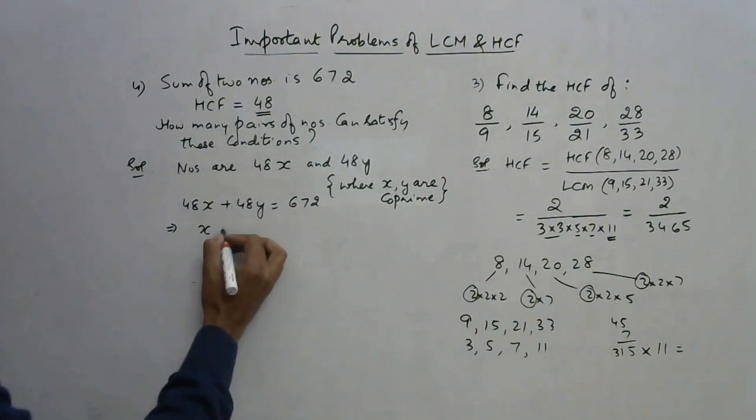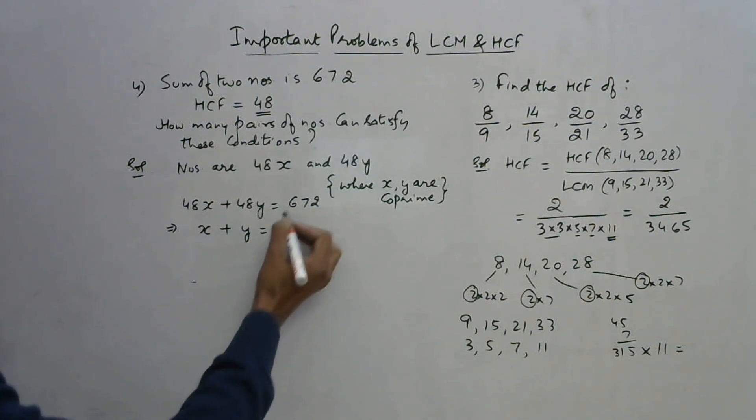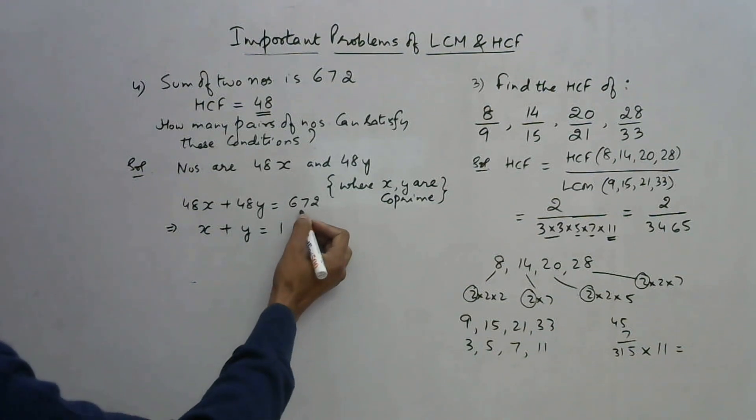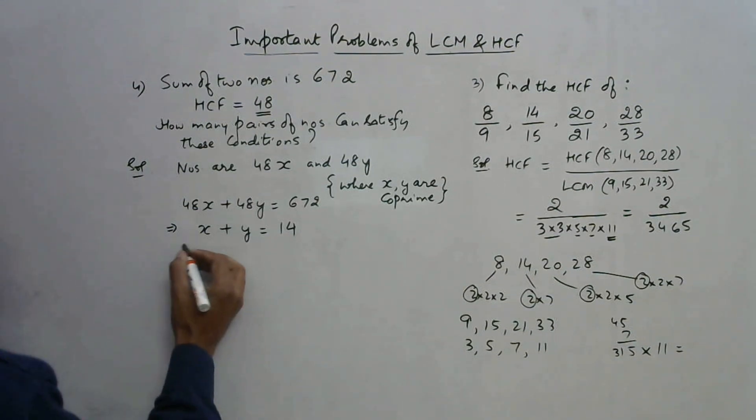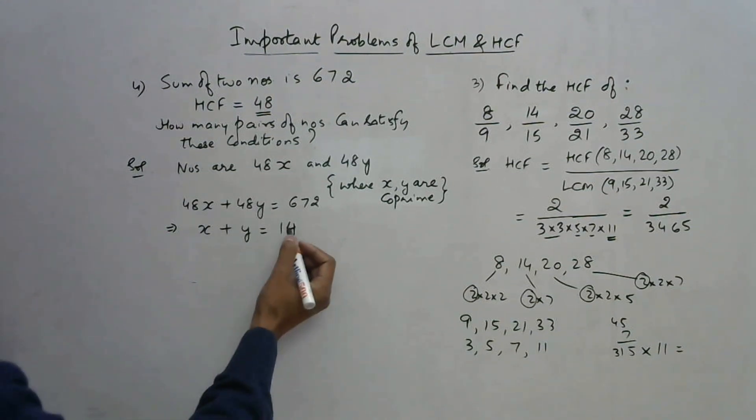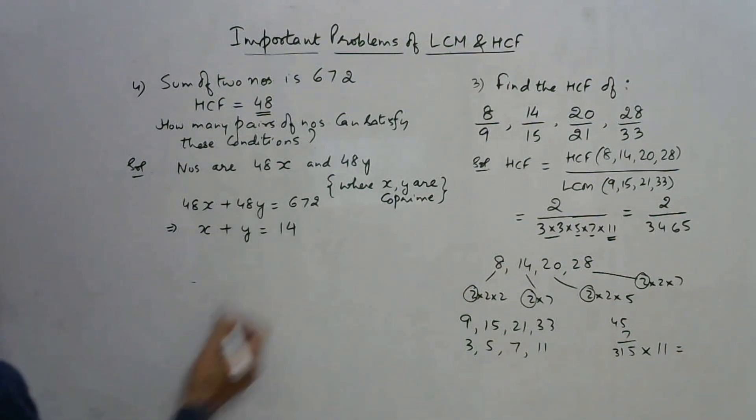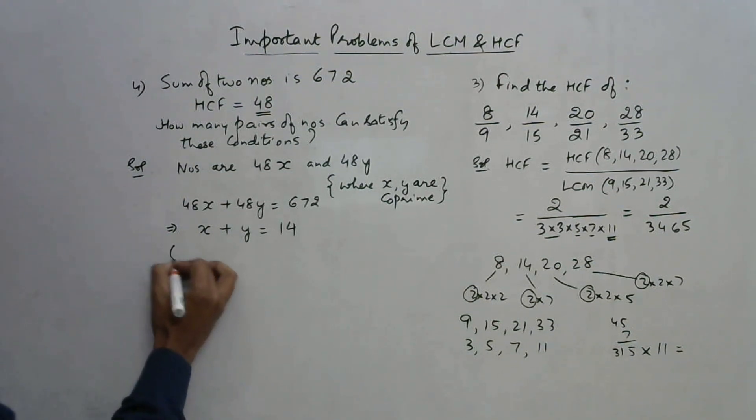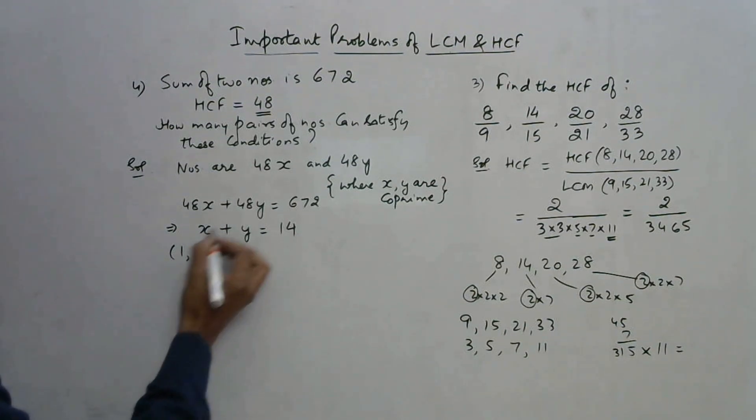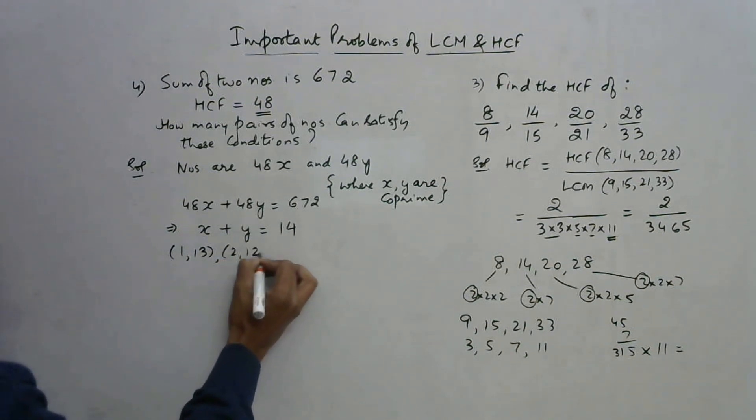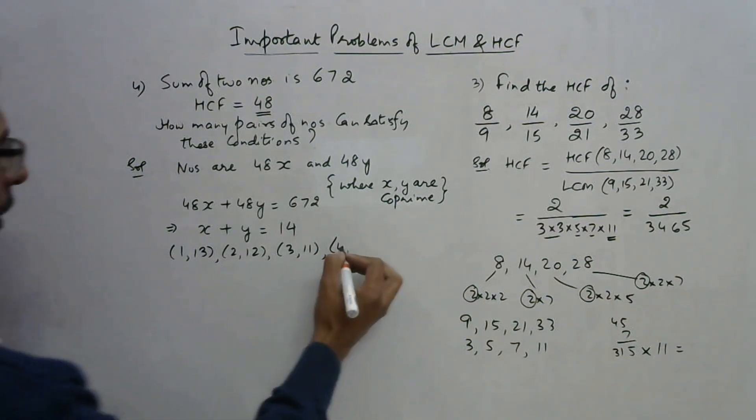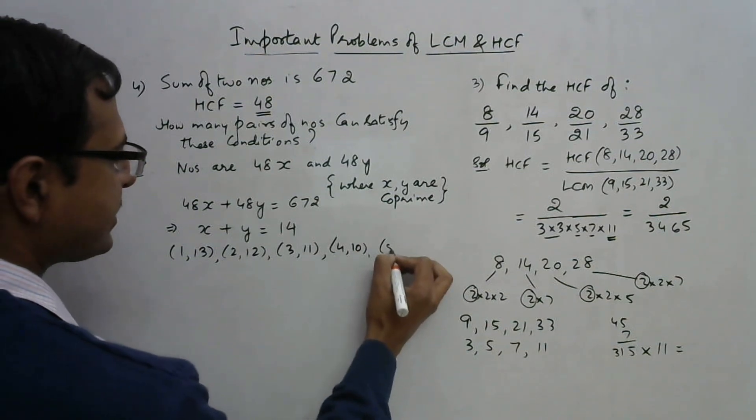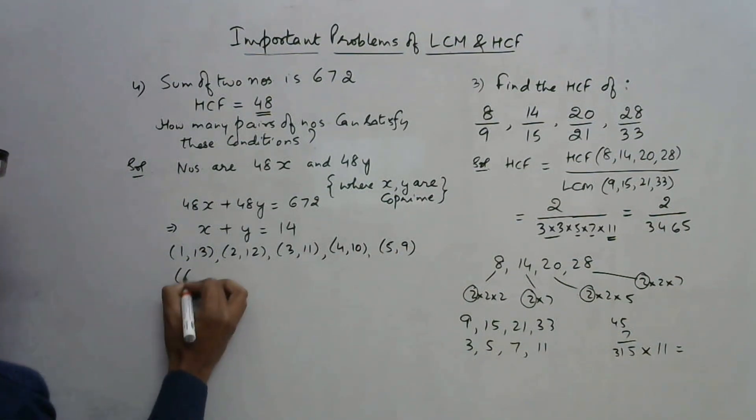If you cancel 48 throughout, dividing 672 by 48, this becomes 14. So x plus y equals 14. Now how many pairs of numbers satisfy x plus y equal to 14? If x is 1, y is 13; if x is 2, y is 12; 3 and 11; 4 and 10; 5 and 9; 6 and 8; 7 and 7.